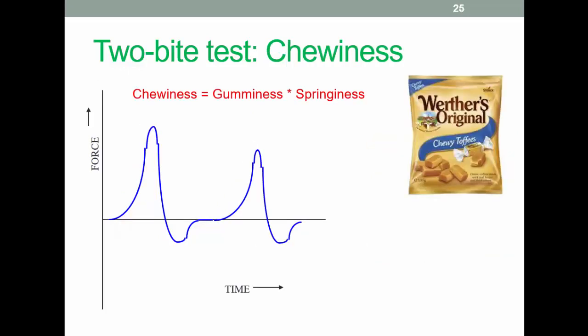Chewiness is a calculation based on a product of gumminess and springiness, and there's an image there as an example.